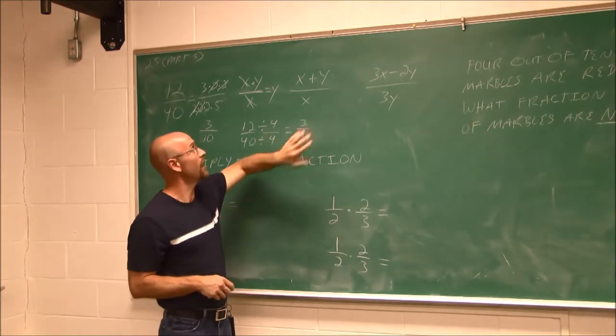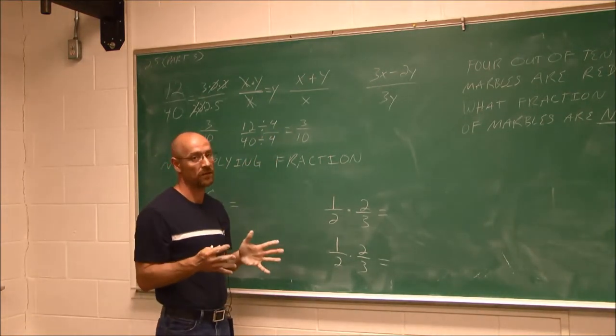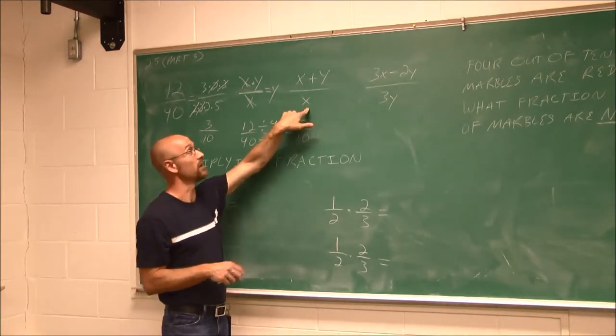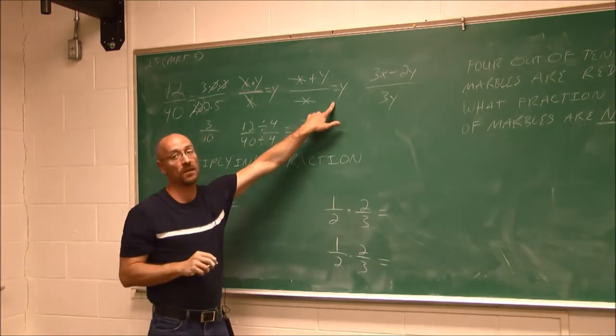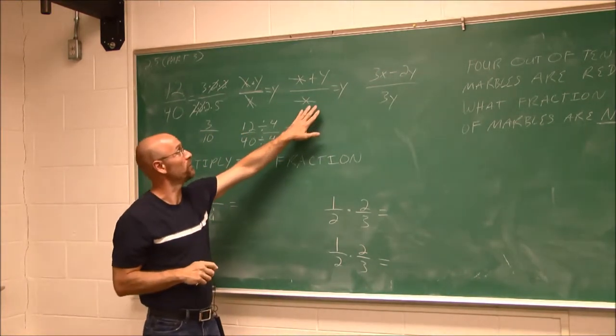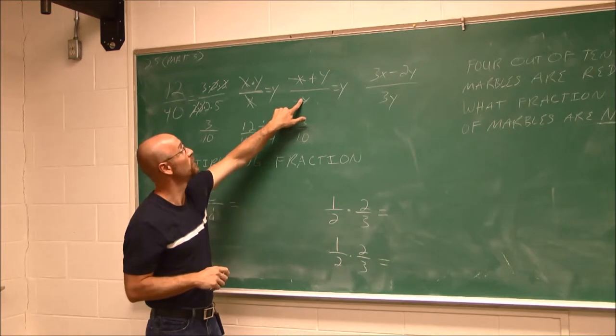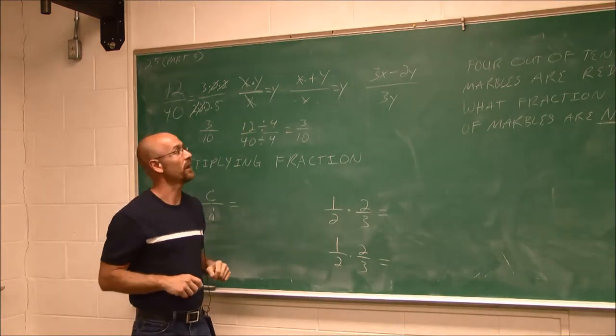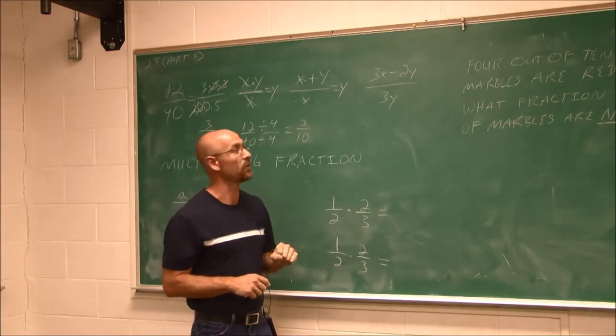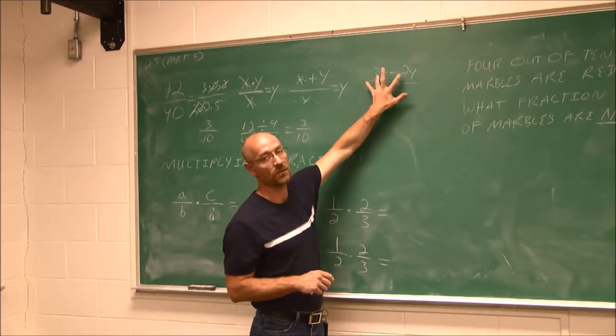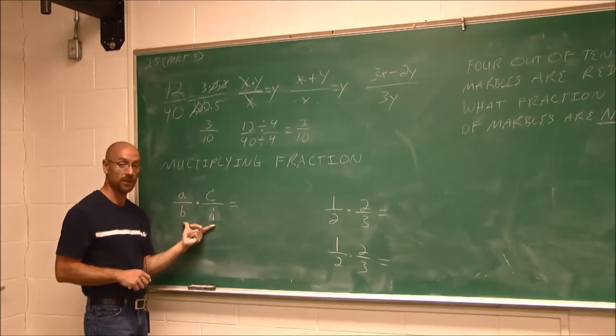These are called factors when they're multiplied. You can only cancel factors. This is a binomial. You cannot cancel one term of a binomial or trinomial, anything separated by addition or subtraction. This would be an illegal operation. If you canceled that out and said this equals y, that is not a true statement. If they had a math prison, you'd be on your way there. So don't ever cancel terms. You see addition or subtraction, don't cancel. Same thing here. I can't cancel these threes or those y's. These are not factors, they're terms. Be aware of that and don't make that mistake.